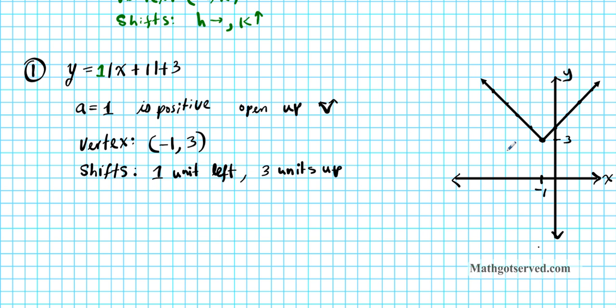Let's label the vertex. This right here is the vertex, and it is given by the coordinates negative one, comma, three.